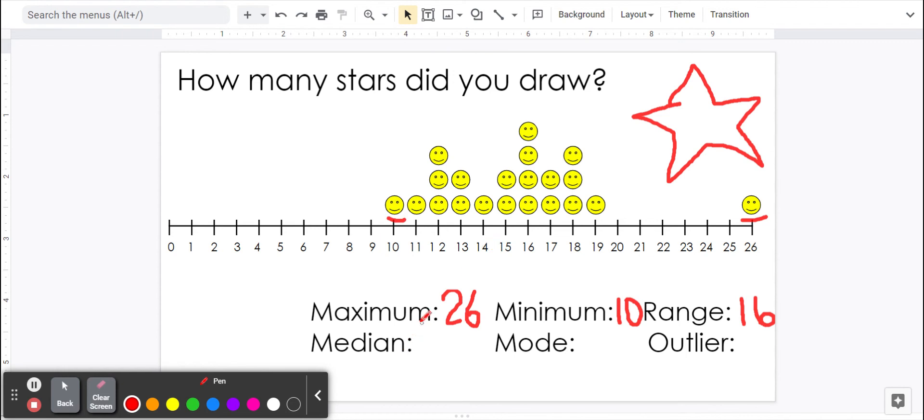All right, median. This is kind of the trickiest one. Median is the middle number, but it's not the middle number on the number line. What we need to do is find the middle of the responses or these smiley faces.